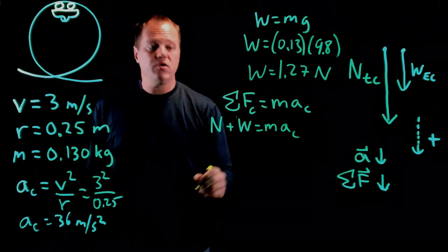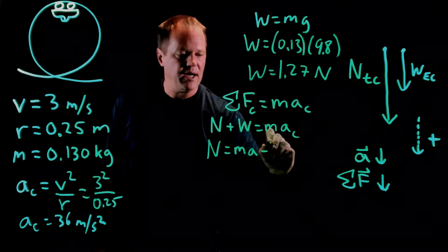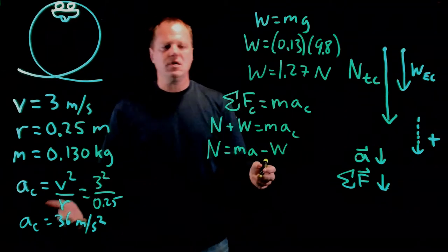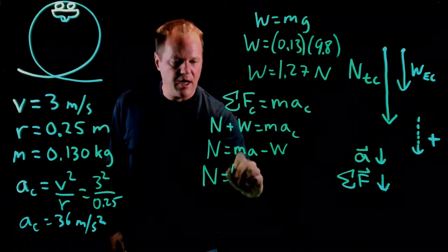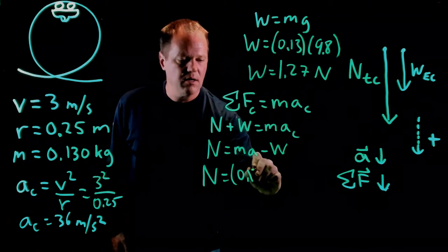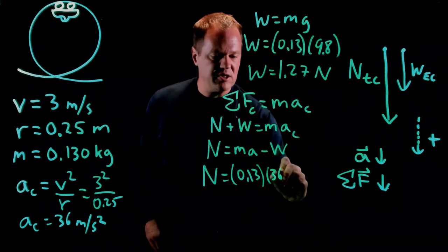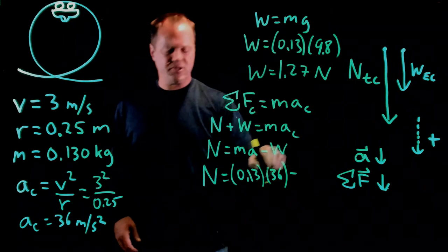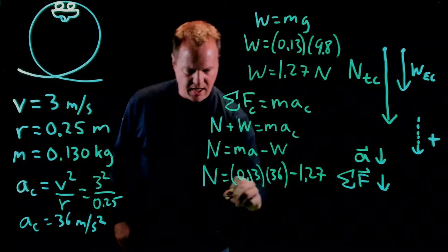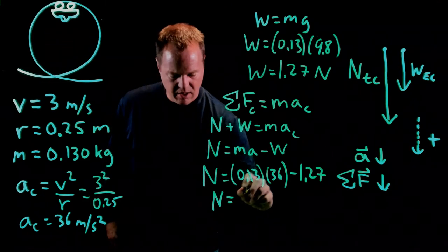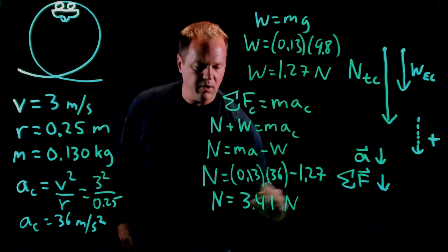And then I just need to solve for the normal force. So normal would be ma minus w. And we just need to throw in the numbers in order to get the normal force. So the normal force will be a mass of 0.13 times the acceleration, which I calculated earlier is 36, and minus the weight force of 1.27. And I throw those things into my calculator, and it tells me the normal force is 3.41 newtons.